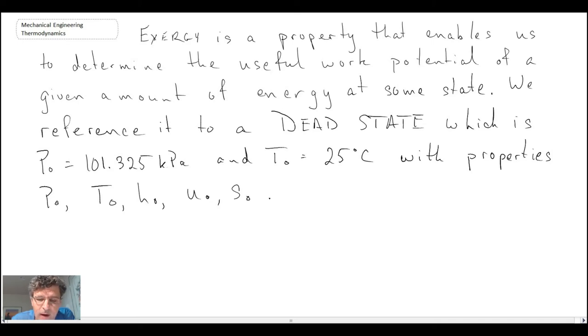And out of convention of exergy and exergy analysis, what we do is we specify this dead state to be that of 101.325 kilopascals for pressure, which is normal atmospheric pressure and atmospheric temperature, 25 degrees Celsius. And we also assign property information to the dead state. And that is P-naught, T-naught, H-naught, U-naught, and S-naught.